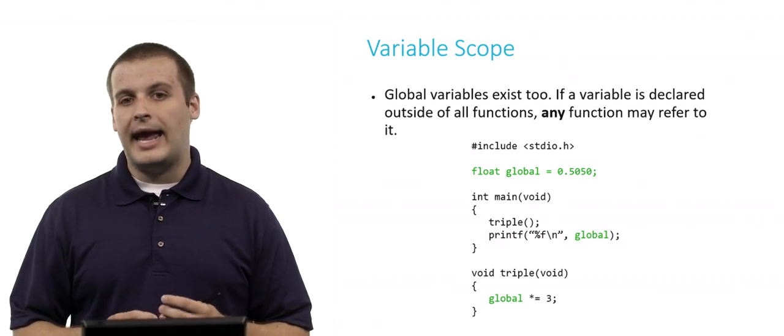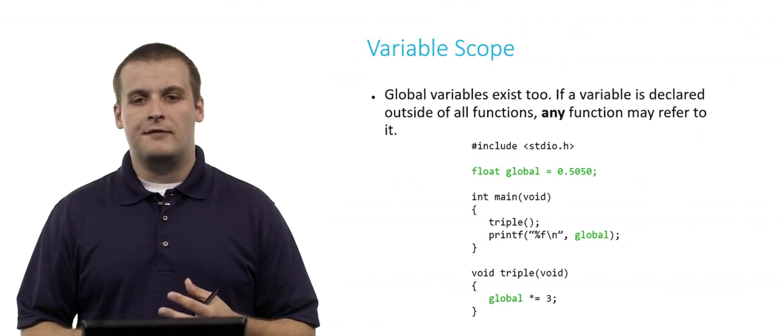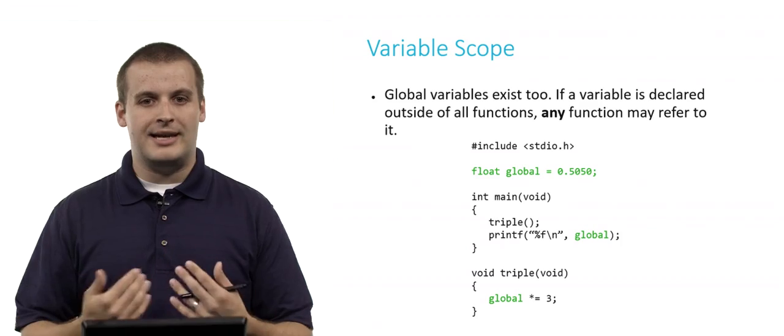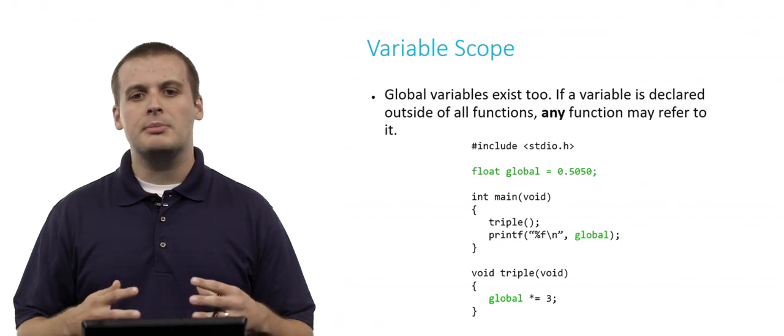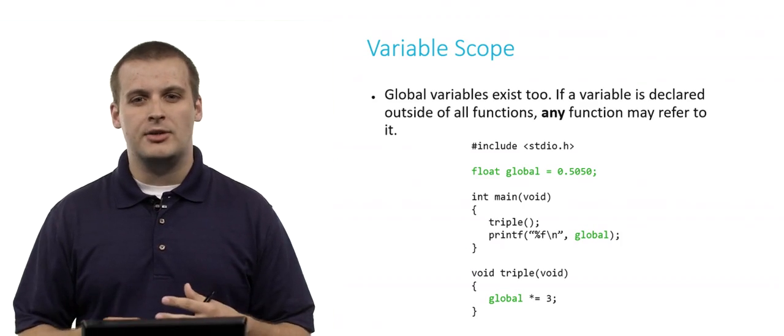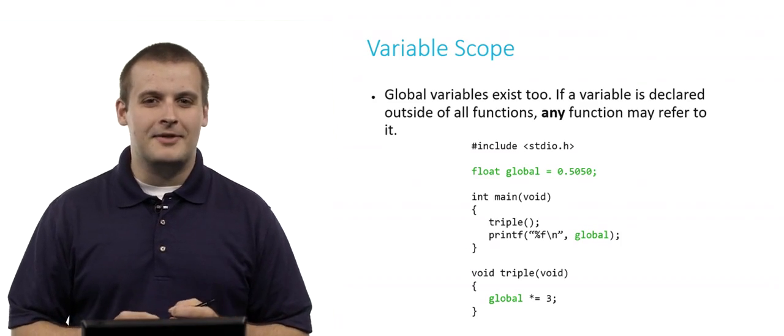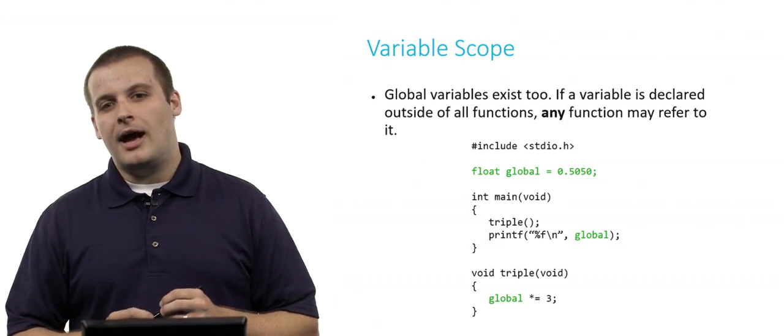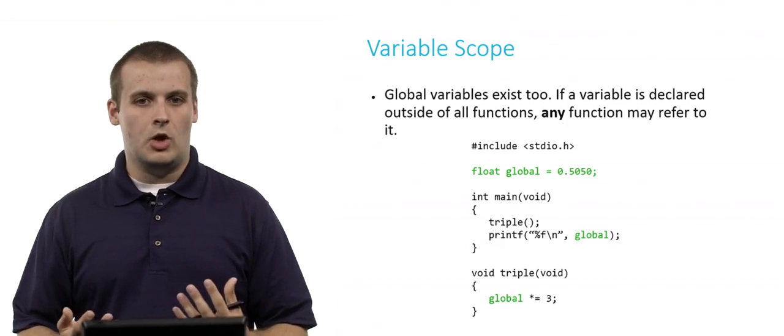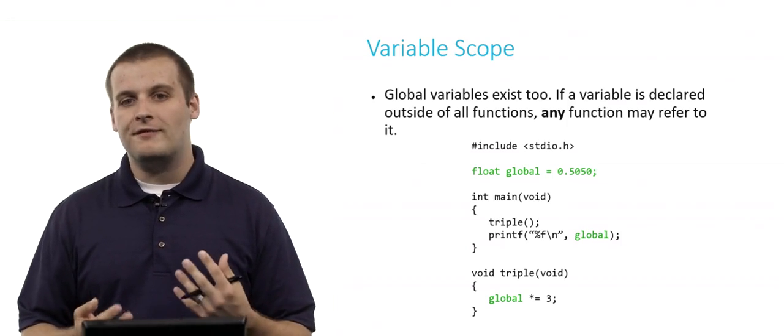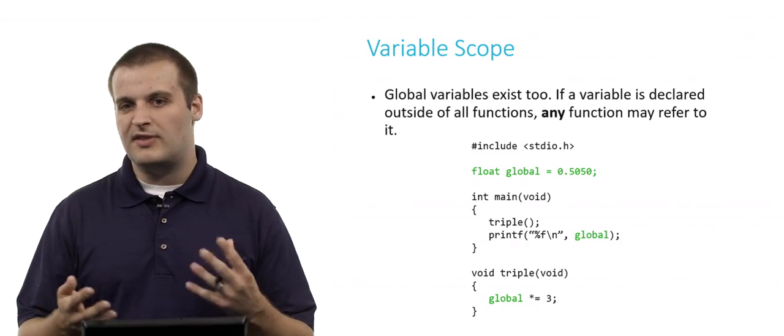You'll notice that in main and in triple, I am able to refer to global. And in fact, if I go through the program as indicated, main first calls triple. Triple multiplies global by 3, which sets its value to 1.5 something, 1.51 or something like that. And then main also prints out the value of global. So main will not print out 0.5050. It will print out global times 3, 1.51.